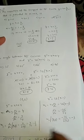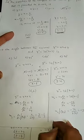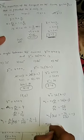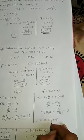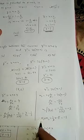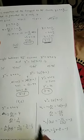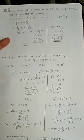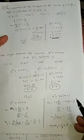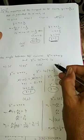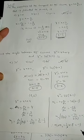Now, m1 × m2 = (1/3) × (−3) = −1. Since the product of the slopes is −1, the angle between the two curves is 90 degrees. Therefore option D is the correct answer. Thank you.